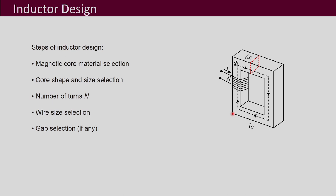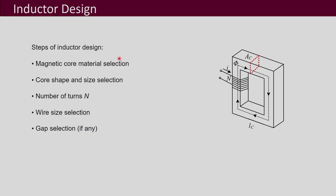Welcome to the course on design of power electronic converters. We are in the module of magnetics design and today we will look into inductor design. The main steps of inductor design are: first, we choose the magnetic core material. This we have discussed at length — it depends on the frequency of operation, the required saturation flux density, the permeability, and several other factors.